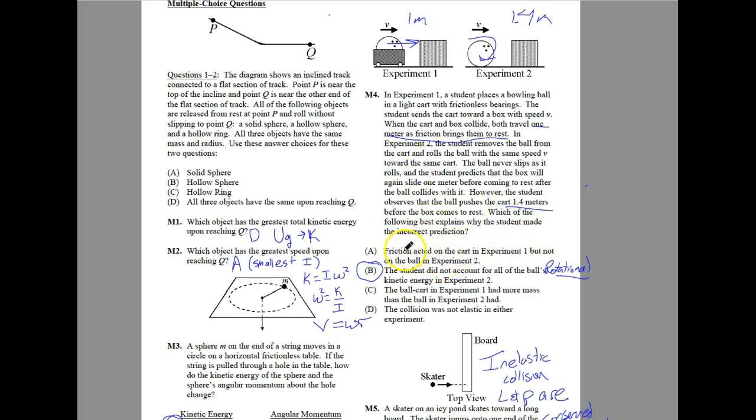So here, the student thinks about it, and they say, which of the following best explains why the student made the incorrect prediction? Friction acted on the cart in experiment one, but not on the ball in experiment two. That's not right. The ball cart in experiment one had more mass than the ball in experiment two. No, that's not the reason either. The collision was not elastic in either. No, that's not the reason either. So it's got to be the student did not account for all of the ball's kinetic energy in experiment two. And that is correct. That person thought about linear kinetic energy, but not about rotational kinetic energy. That extra rotational kinetic energy gives it that extra 0.4 meters.